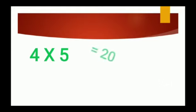4 fives are 20. Speak with me — 4 fives are 20. When we multiply 4 into 5, we get 20. What we get when we multiply 4 into 5? Tell me, students. Yes, we get 20. Speak with me — 4 fives are 20.